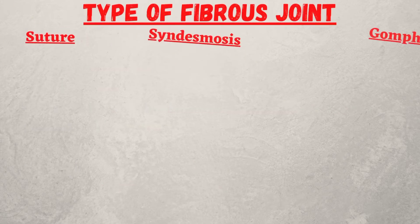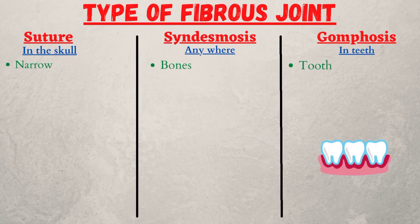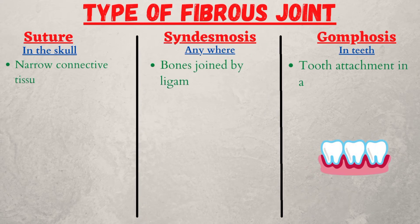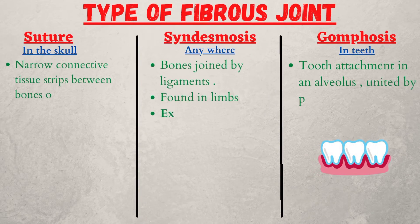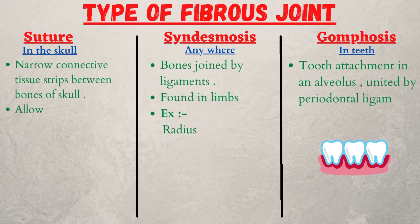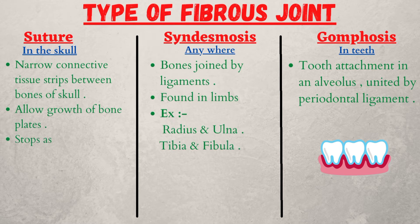Types of fibrous joint are: suture, syndesmosis, and gomphosis. The suture is found in the skull — it consists of narrow connective tissue strips between the bones of the skull. It allows growth of bone plates, which stop as ossification occurs.